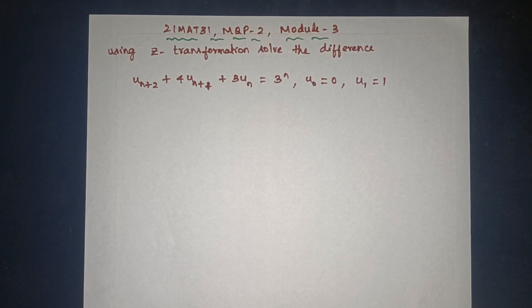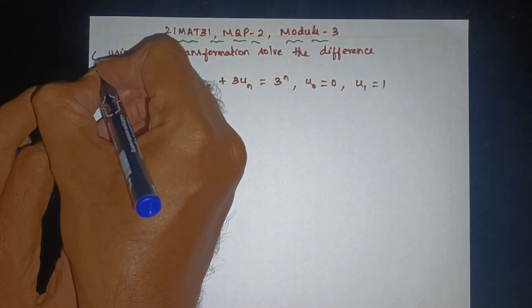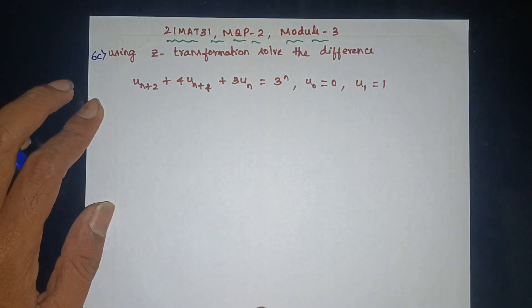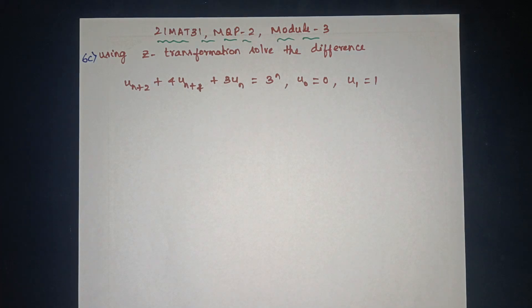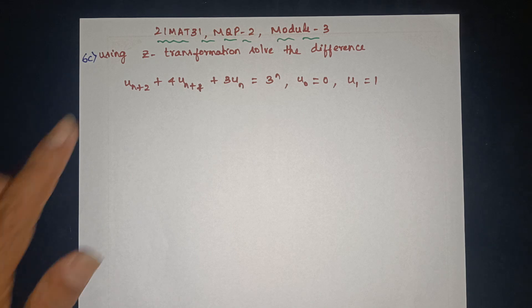This is the 21.31 model question paper tool, module 3 question, 6c question. Using Z-transform, solve the difference equation u(n+2) + 4u(n+1) + 3u(n) = 3^n, with initial conditions u(0) = 0 and u(1) = 1.